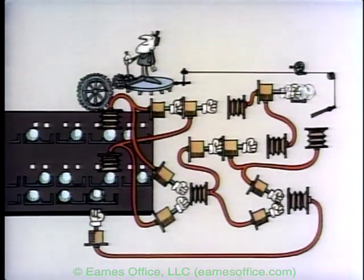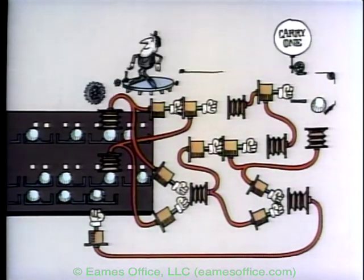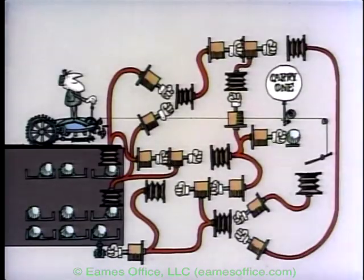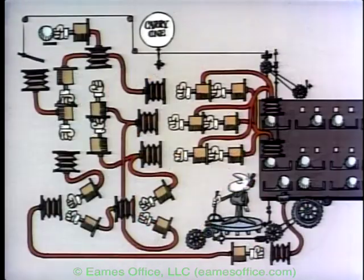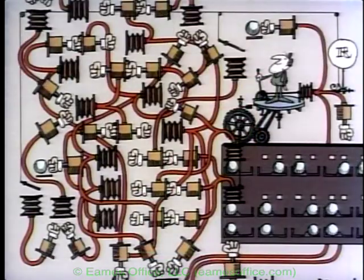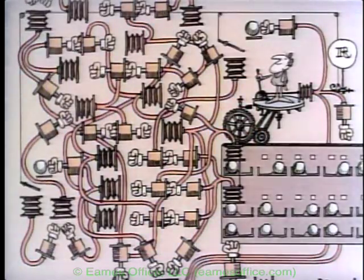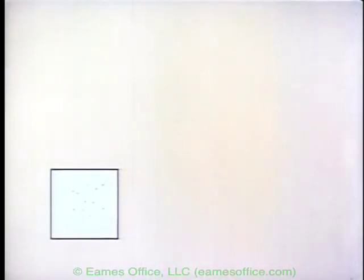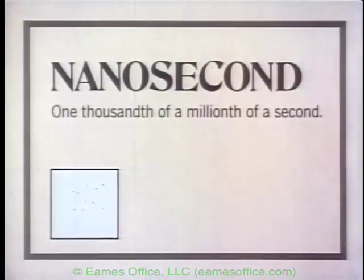The connections get to be complicated — a complexity that pays off because of the extraordinarily short time in which electronic elements can change their state. In the computer, the basic operations can be done within the order of a nanosecond: one thousandth of a millionth of a second.